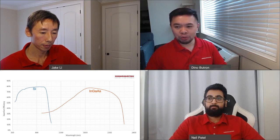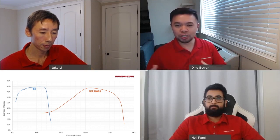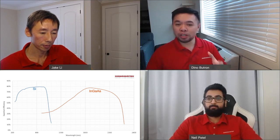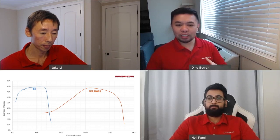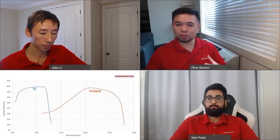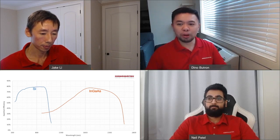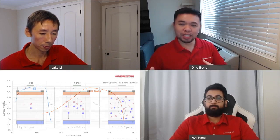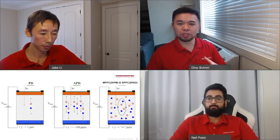When we refer to energy in this case, that means the wavelength or the color of light. Silicon operates from UV around 200 nanometers up to the near infrared around 1000 nanometers, and InGaAs can operate from 500 nanometers up to about 2.6 microns or 2600 nanometers. InGaAs is more expensive than silicon, so it's mostly used when the wavelength is beyond the range of silicon.